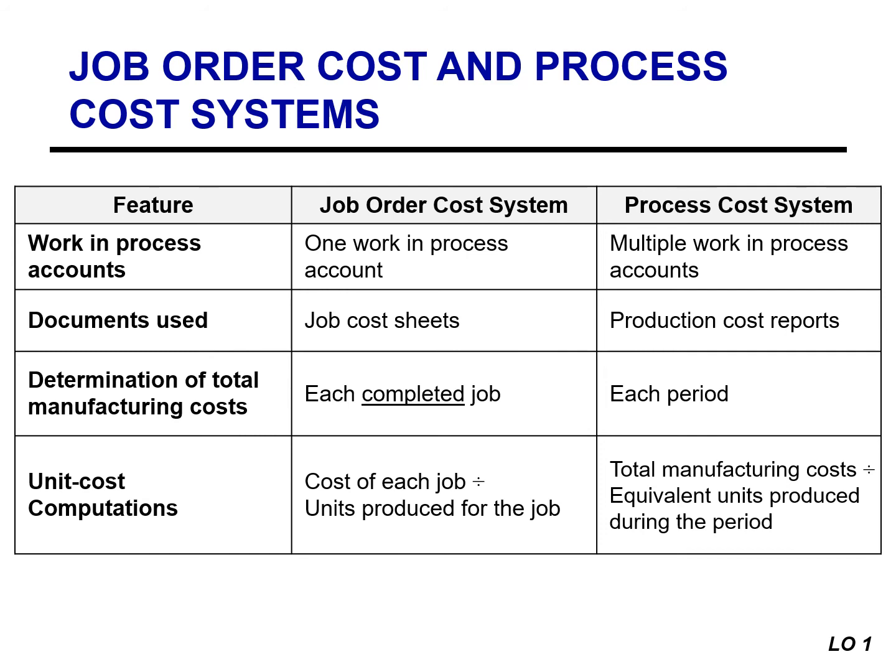The third difference is the point at which costs are totaled. A job order cost system totals cost when the job is completed, whereas a process cost system totals cost at the end of a period. The fourth difference is the unit cost calculation. In a job order cost system, unit cost is the total cost per job divided by units produced. In a process cost system, unit cost is the total manufacturing cost for the period divided by the equivalent units produced during the period.